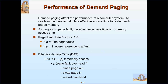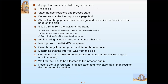The effective access time is calculated as: (1 - p) times memory access time, plus p times the sum of page fault overhead, swap page out, swap page in, and restart overhead. Page fault overhead and restart overhead involve saving the state of the process into the PCB — the process control block — including all temporary register values. When the process is restarted after the page is loaded, the PCB data is restored to the respective registers. Swap page in and out refer to the time required for swapping the page.